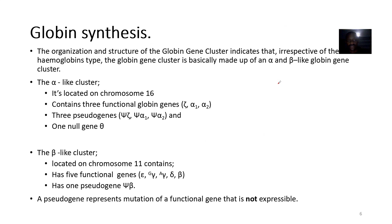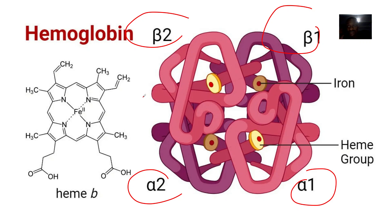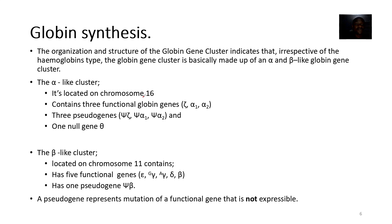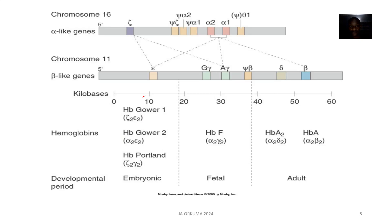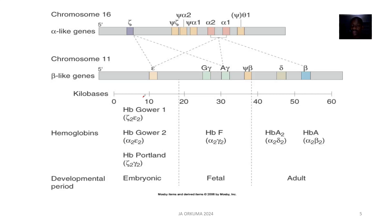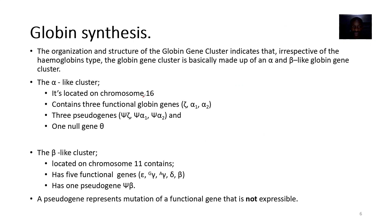The organizational structure of the globin gene cluster indicates that, irrespective of hemoglobin type, the globin gene cluster is basically made up of alpha- and beta-like globin chains. The alpha-like cluster is located on chromosome 16, contains three functional globin genes — zeta, alpha-1, and alpha-2 — and three pseudogenes. The beta-like cluster is on chromosome 11, with five functional genes and just one pseudogene.